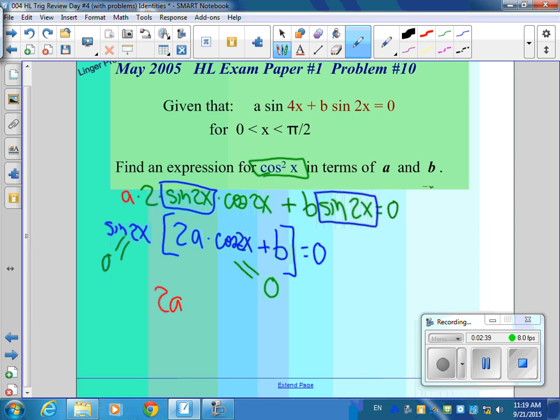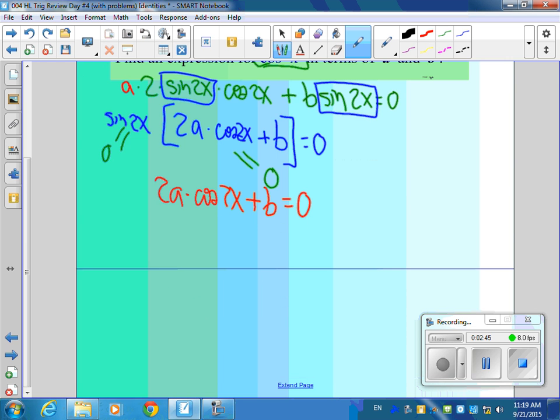We have 2a cosine 2x plus b equals 0. I'm just going to solve for cosine 2x. 2a cosine 2x equals negative b. So cosine 2x equals negative b over 2a.